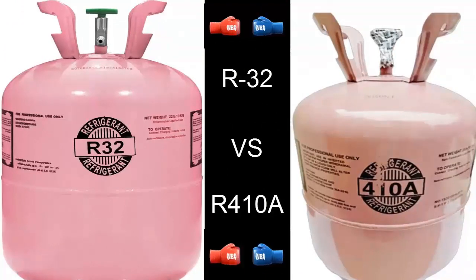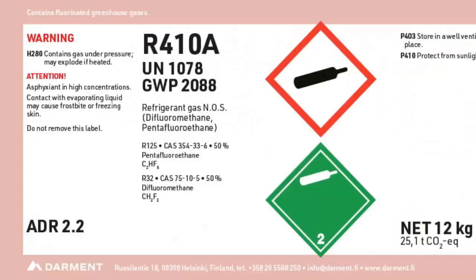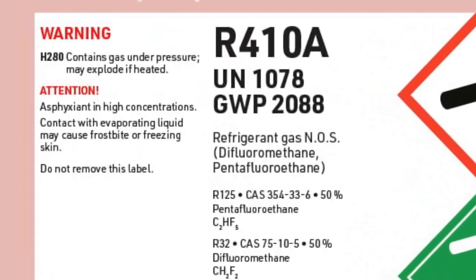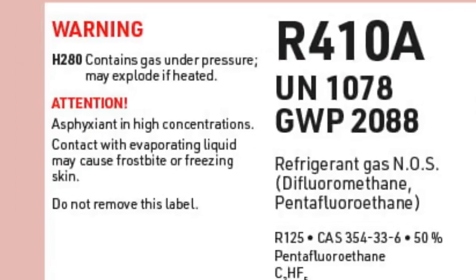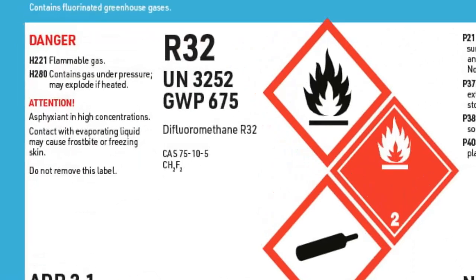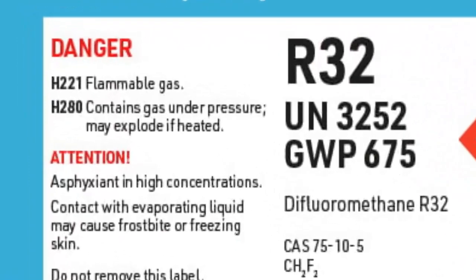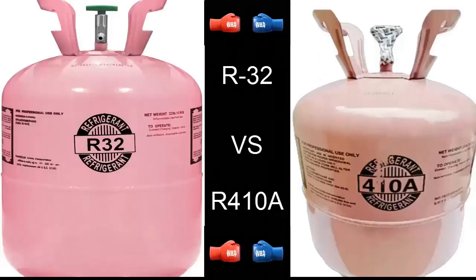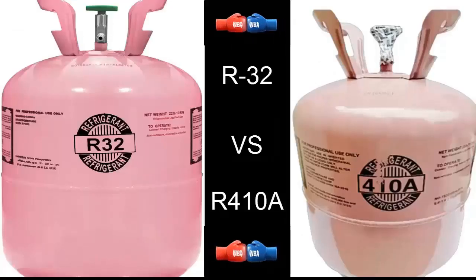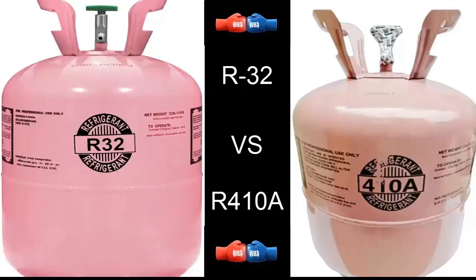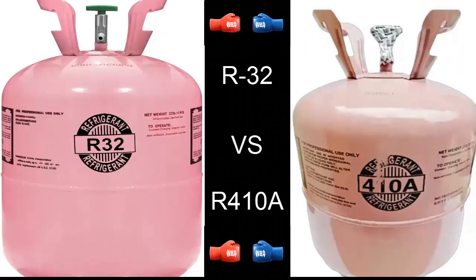Furthermore, it's imperative to consider the environmental impact. The global warming potential, GWP, of R410A is 2085, while the GWP of R32 is 675. This highlights that R32 has a lesser environmental footprint in terms of greenhouse gas emissions.